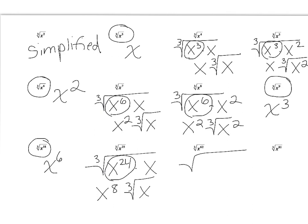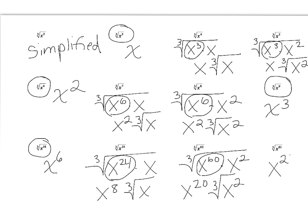For the next one you have to go back two, so it would be the cube root of x to the 60th times x to the second. The cube root of x to the 60th is x to the 20th — you're dividing 60 by three — and you're left with the cube root of x to the second. Now for the cube root of x to the 81st: 81 is actually divisible by three. There's a divisibility rule for three where you add up the digits — 8 plus 1 is 9, and 9 is divisible by three, so 81 must be divisible by three. 81 divided by 3 is 27, so the answer is x to the 27th.